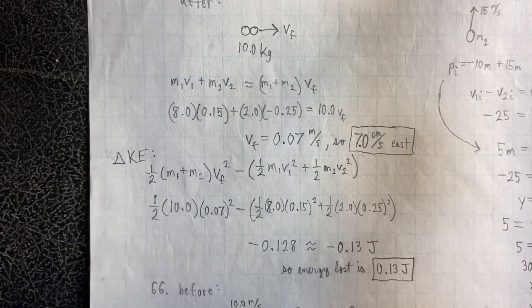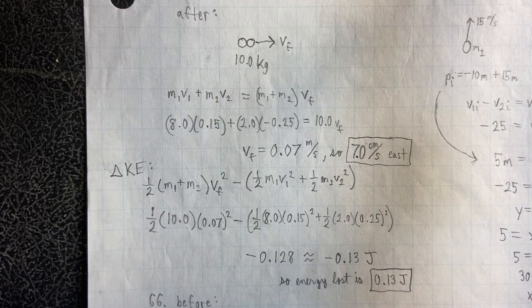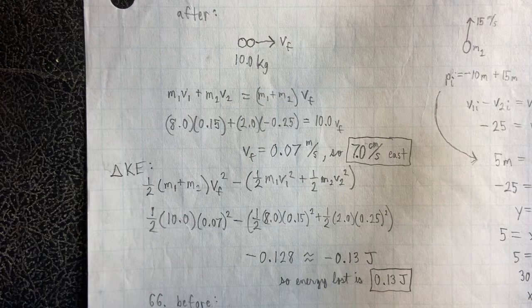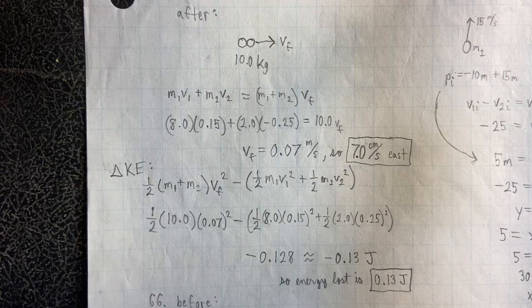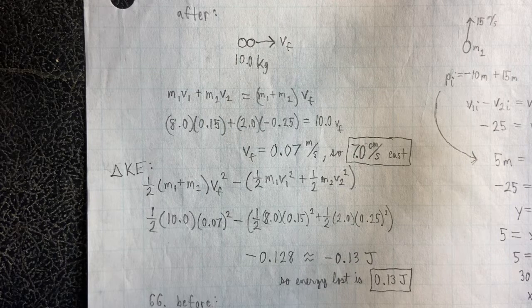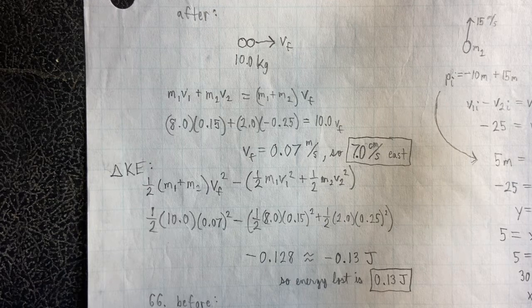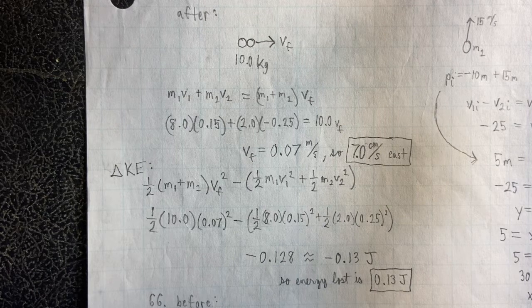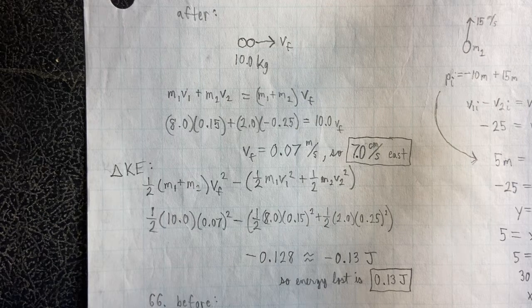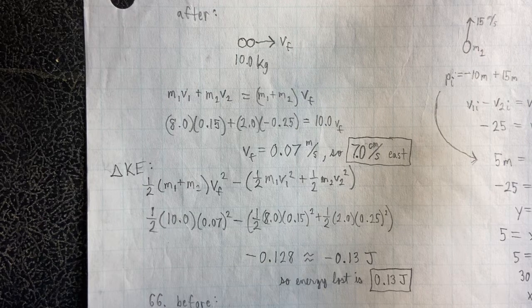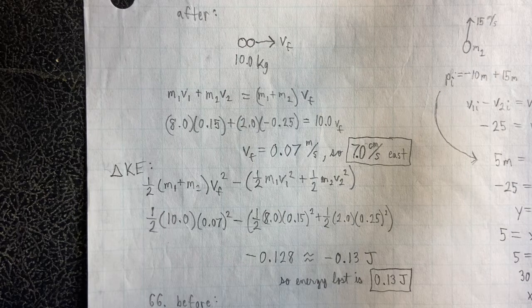Now, the change in kinetic energy, which we're also asked for, we just get that by adding and subtracting. Okay, so we compare the final kinetic energy to the initial kinetic energy. And what we find out is that there is a negative difference, meaning that our final kinetic energy is lower than our initial kinetic energy.